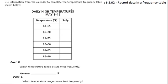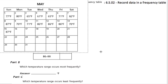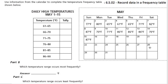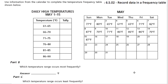One of the things we need to be able to do is record information into this table, which is called a frequency table. In this situation, we're recording temperature — daily high temperatures — that are given to us on a table. This is the table they gave us for the month of May, and they want us to use this information to fill in our frequency table, which might seem overwhelming at first, but we can handle it.